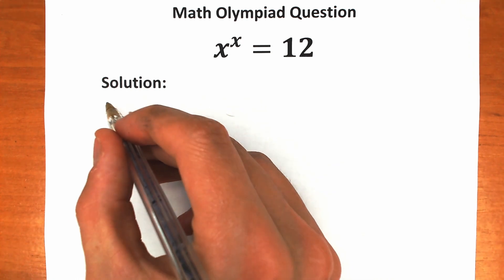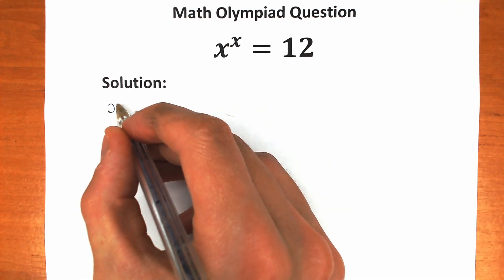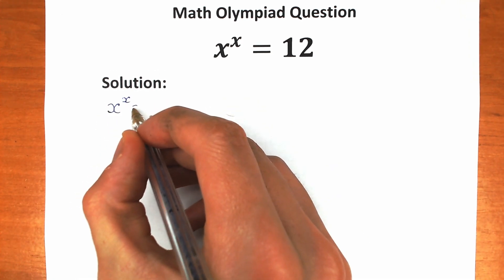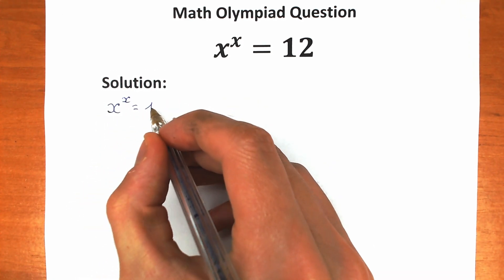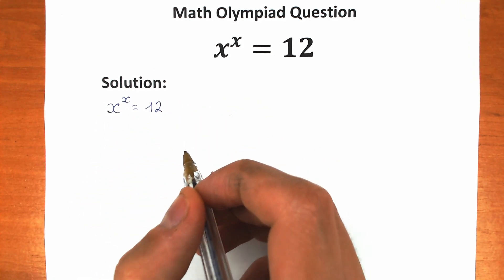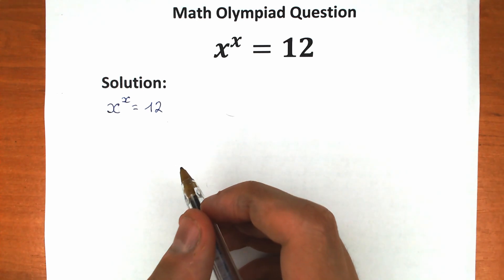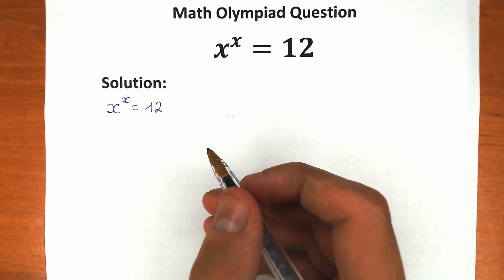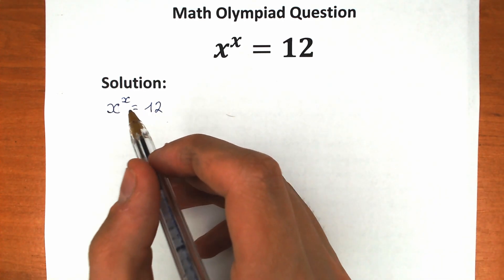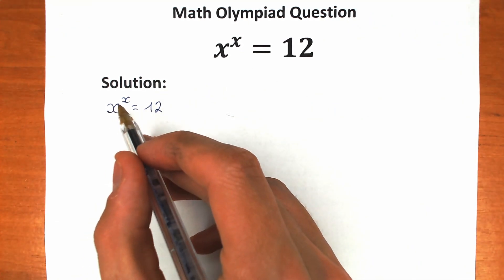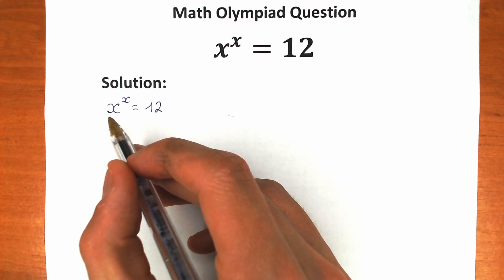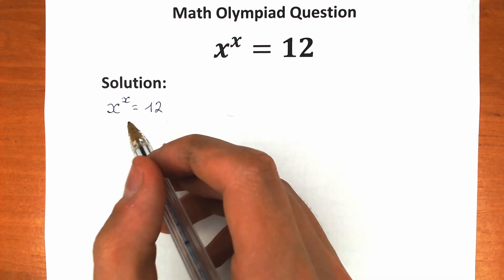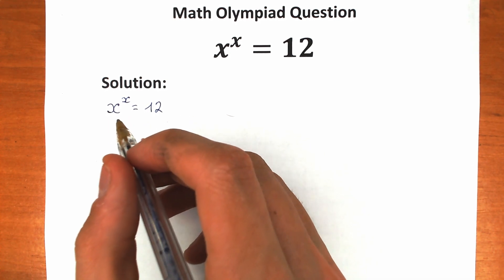First of all, let's rewrite our challenge: x to the power x equals 12. We have x as a power and x as a base, which is tricky. So let's apply the natural log on both sides.